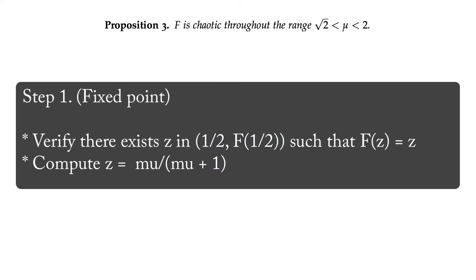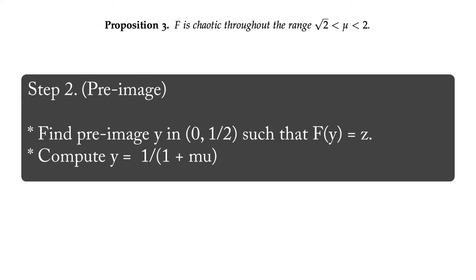Step 1: We can verify that there's always a fixed point z in 1 half to f of 1 half. In fact, this fixed point is at z equal to mu over mu plus 1. Step 2: We can verify that there's a preimage to the fixed point y in 0 to 1 half, such that f of y is equal to z. Go and compute this, and you should find that y is equal to 1 over 1 plus mu.